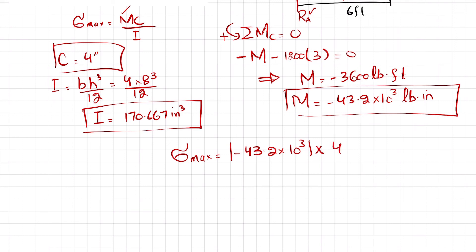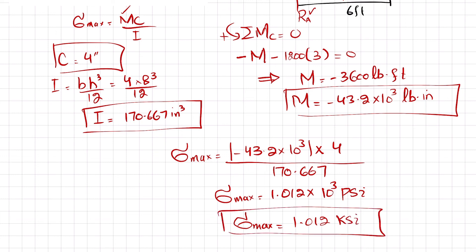C is 4 inches divided by I which is 170.667. When you calculate this, maximum stress comes out to be 1.012 times 10 to the power 3 psi, or in terms of ksi, the maximum stress at point C is 1.012 ksi. This is the stress at point C of the cross section of the beam.